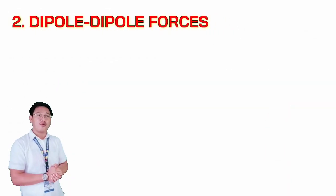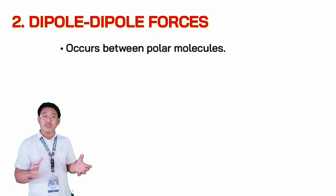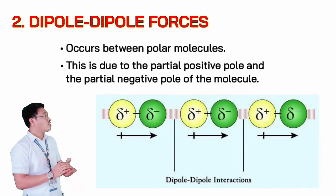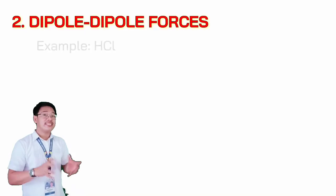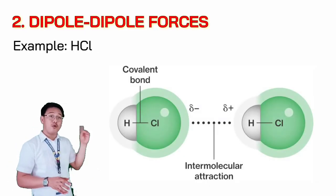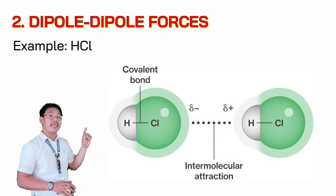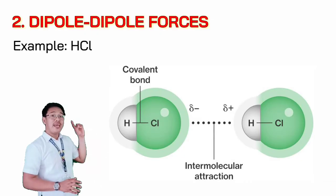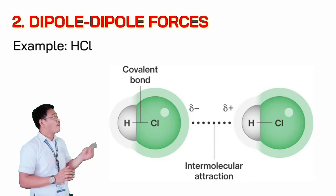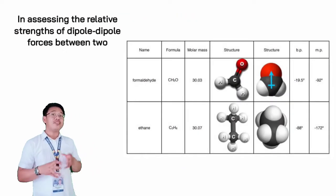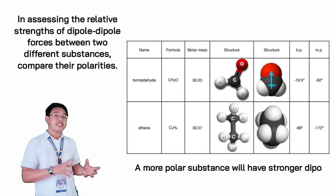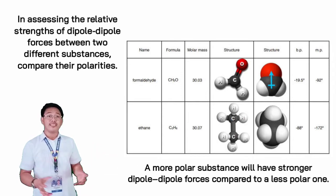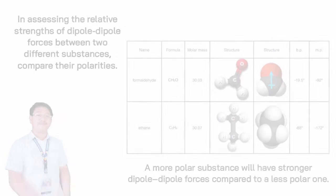Next is the dipole-dipole forces. This occurs between polar molecules, due to the partial positive pole and the partial negative pole of the molecules — they act as little magnets. For example, hydrochloric acid is a polar molecule with partially positive and partially negative ends. The partially positive end of one molecule is attracted to the partially negative side of another molecule. In assessing the relative strength of dipole-dipole forces between two different substances, compare their polarities. A more polar substance will have stronger dipole-dipole forces compared to a less polar one.